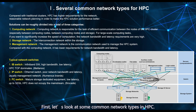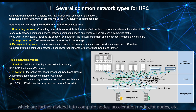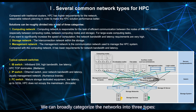First, let's look at some common network types in HPC. From the diagram, it's clear that the upper layer consists of server devices, which are further divided into compute nodes, acceleration nodes, FAT nodes, etc. The middle layer connects these nodes through various networks. The lower end is storage, which relies on networks to connect with compute and FAT nodes. We can broadly categorize the networks into three types.